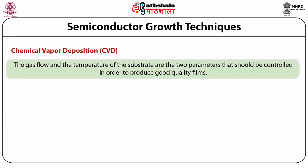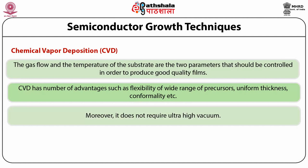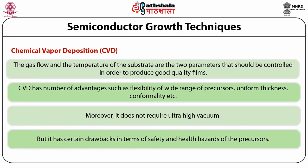The gas flow and the temperature of the substrate are the two parameters that should be controlled to produce good-quality films. CVD has a number of advantages such as flexibility, a wide range of precursors, uniform thickness, and conformality. Moreover, it does not require ultra-high vacuum. However, it has certain drawbacks in terms of safety and health hazards of the precursors.